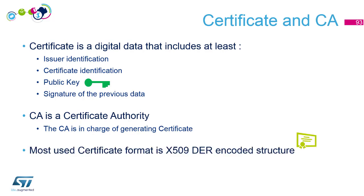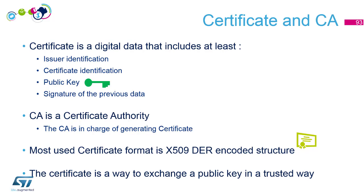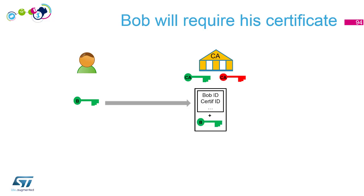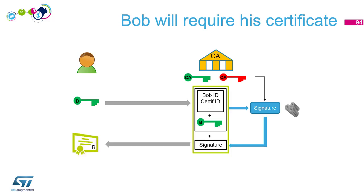The most well-known certificate format is X.509. Certificates and certificate authorities allow us to exchange public keys in a trusted way. The first step is that Bob requests his certificate from the CA — he communicates securely with the CA and provides his public key. The CA assembles all the information and generates a signature using its private key. The signature plus source data forms Bob's certificate. From that point, Bob provides his certificate instead of just his public key. Inside the certificate there is his public key and a signature over it.